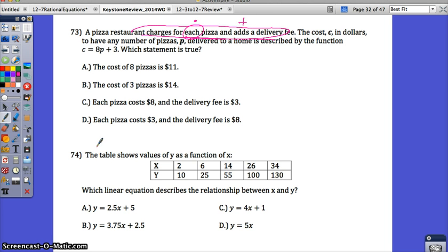Which statement is true? This first sentence is so important because they charge for each pizza. Each often signifies multiply. So you're going to have a charge times the number of pizzas and adds the delivery fee. When you look at this function, you can see right where the each and the adds happens. 8P has multiplication in between, so it's 8 times P, which makes perfect sense. The charge for each pizza. So 8 is the dollars per pizza. And then the adds 3. What is 3? 3 is the delivery fee.